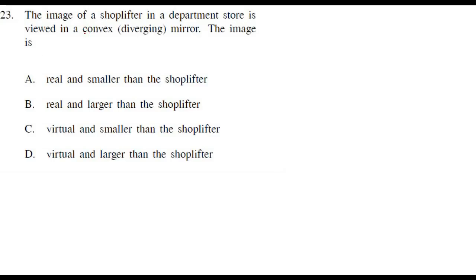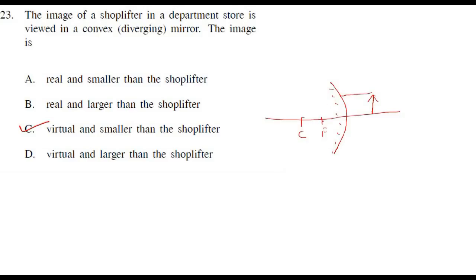The shoplifter's image in a convex mirror — in a convex mirror the image is always virtual and smaller in size. Recall: the object is here, first ray parallel passes as if through focus, second ray passes through pole. The reflected rays are not going to meet, so we extend in the backward direction. The image is smaller. This is the correct option.